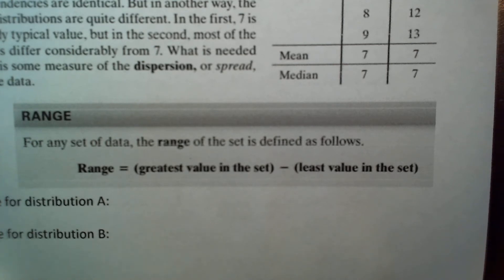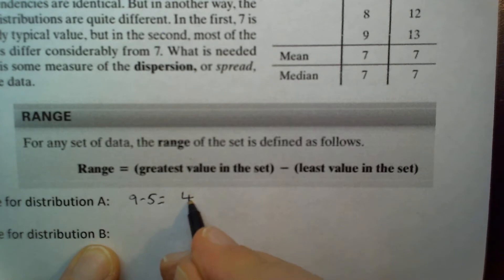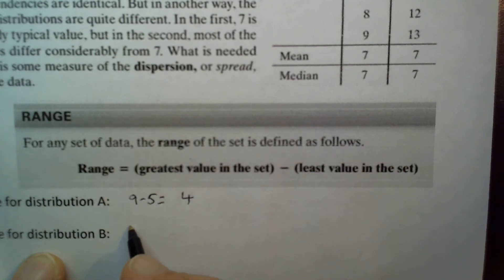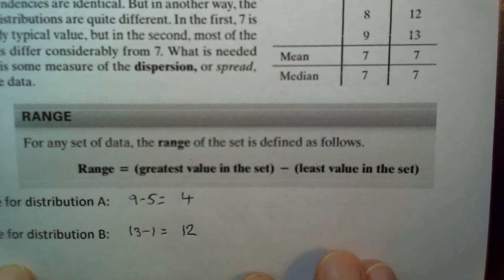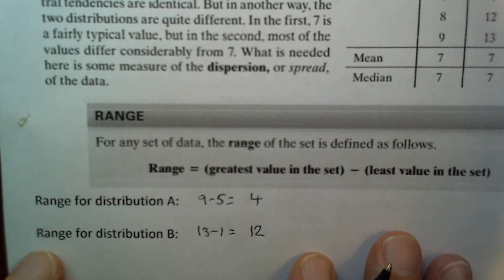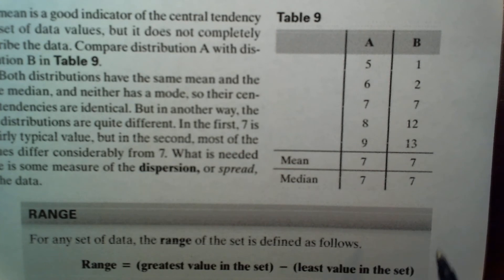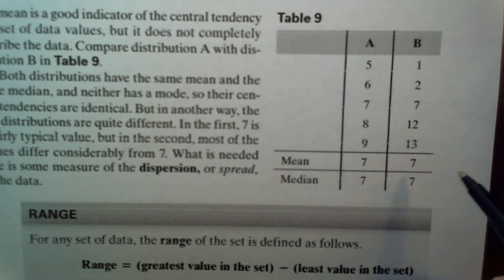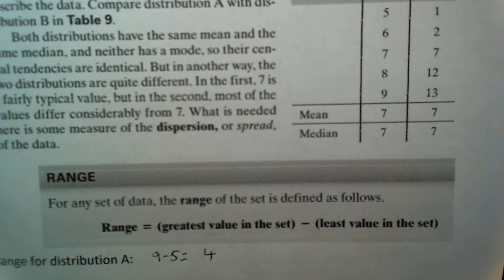The range for distribution A is 9 minus 5, or 4. The range for distribution B is 13 minus 1, or 12. That's a quick way of finding a measure of dispersion — it's fast and easy — but the disadvantage is that it makes use of only two of the numbers in the whole data set, just the greatest and the least value. So to better describe the dispersion, we want to make use of as many of the data set values as possible.